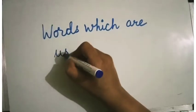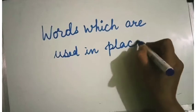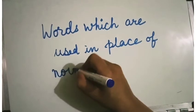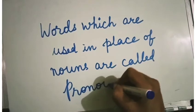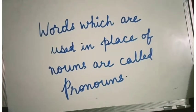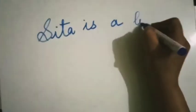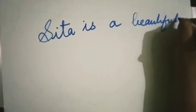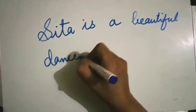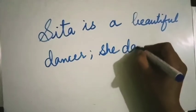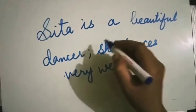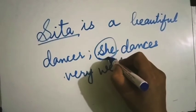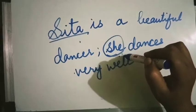Words which are used in place of a noun are called pronouns. For example: 'Sita is a beautiful dancer. She dances very well.' Here, Sita is a noun, and 'she' is used in place of that noun. Therefore, 'she' is a pronoun.